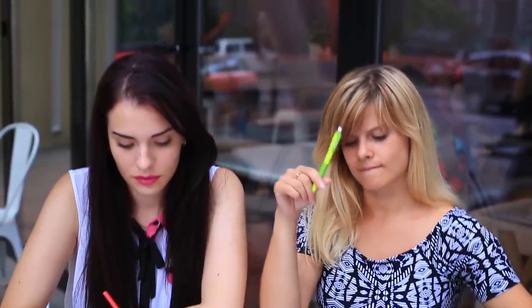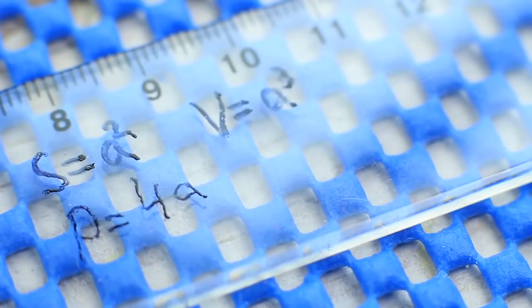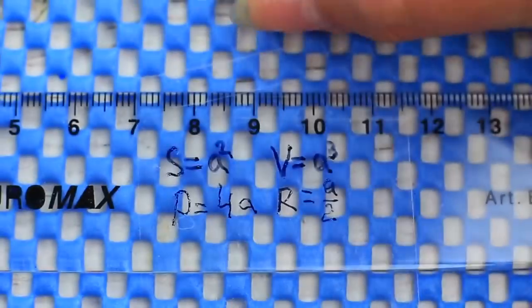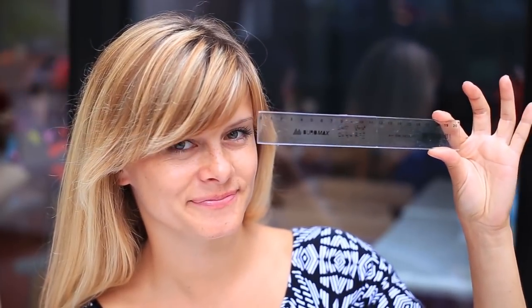A ruler is a useful supply, especially if it's used for cheating. Write necessary formulas on a clear ruler. Attach clear tape to keep the writing in place. It works perfectly well for the short formulas that you mix up all the time.